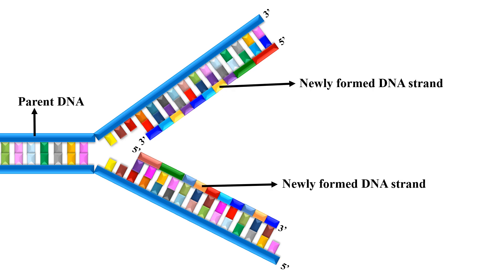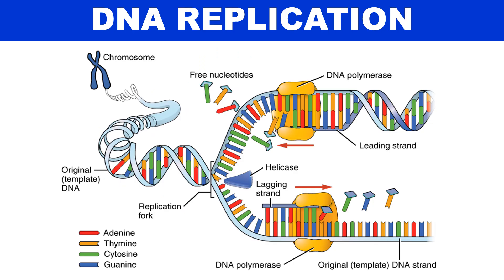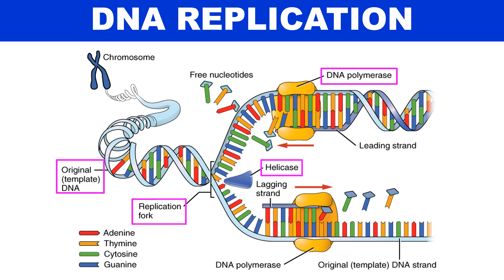This slide shows how a parent DNA is converted into two newly formed DNA molecules. This is the complete scenario of DNA replication. The chromosome is unfolded to a DNA template, which is then replicated. First, helicase opens up the DNA strands to create the replication fork. Then DNA polymerase creates two new strands using free nucleotides — one continuously as the leading strand, and one discontinuously as the lagging strand.